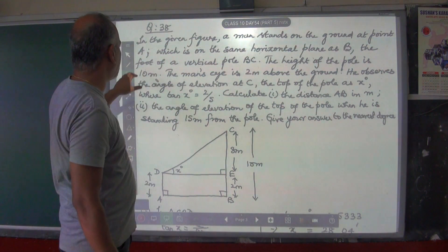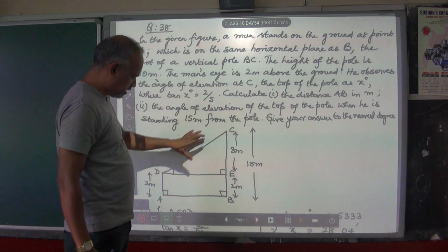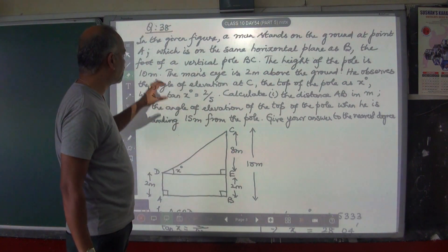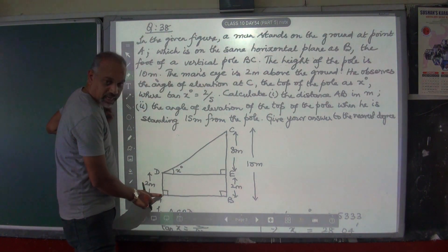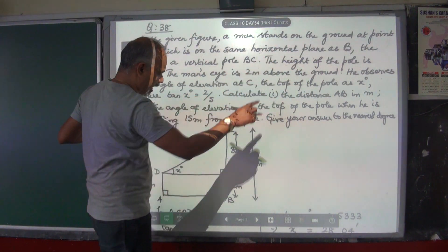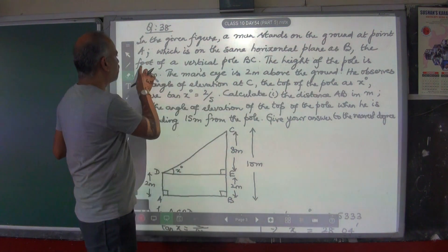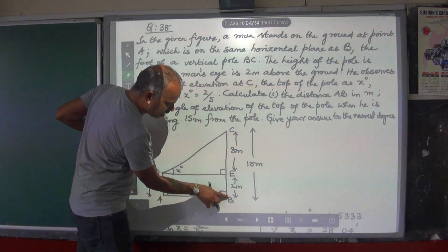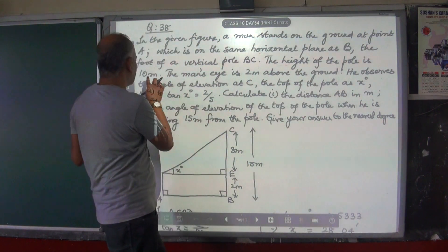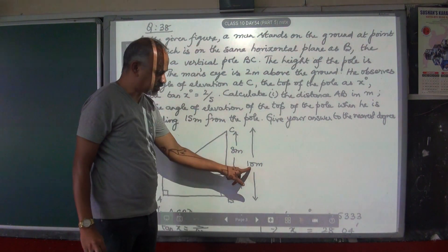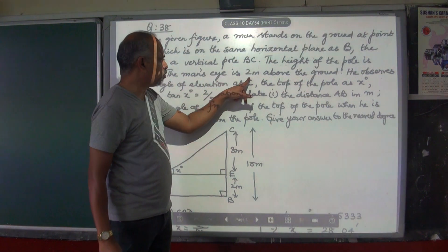Next, question number 38. In the figure given, a man stands on the ground at point A, which is on the same horizontal plane as B, the foot of the vertical pole BC. This is the vertical pole — the foot of the vertical pole is at B. The height of the pole is 10 meters. The man's eye is 2 meters above the ground.